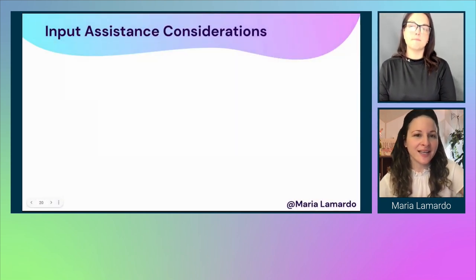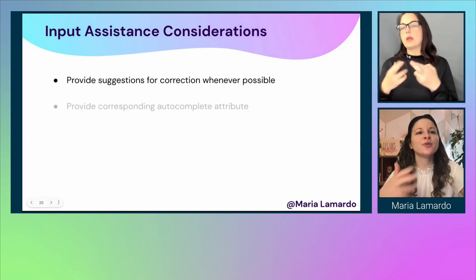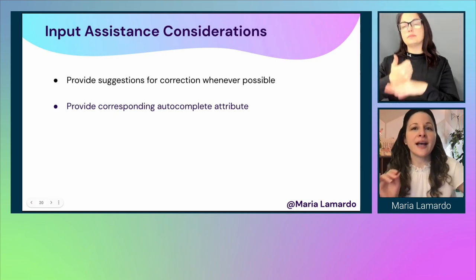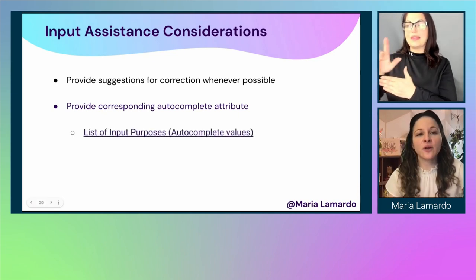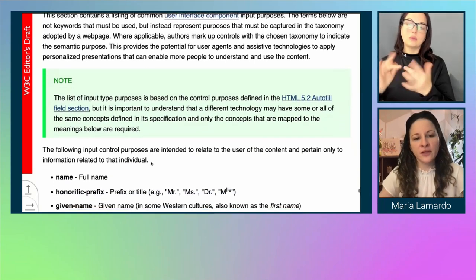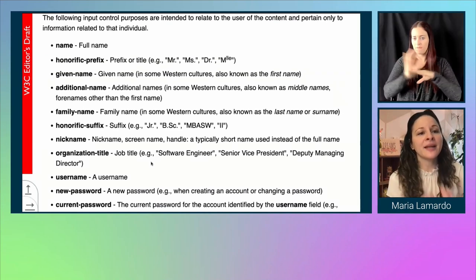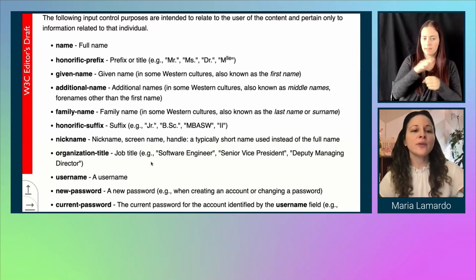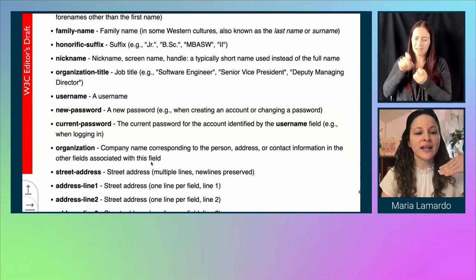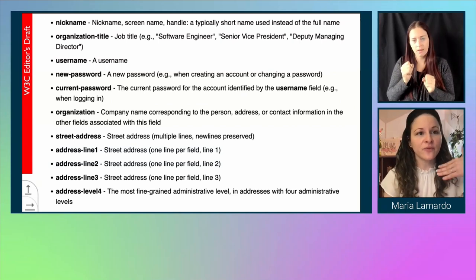You want to provide users suggestions for corrections whenever possible and help them avoid errors by making it faster to fill out forms. You can do this by setting the correct autocomplete attributes on each input field. For example, use autocomplete equals 'name' for full name, 'given-name' for first name, 'family-name' for last name, and so on. There are many autocomplete attributes available so that browser-stored data can be automatically populated, saving users time on each specific input.